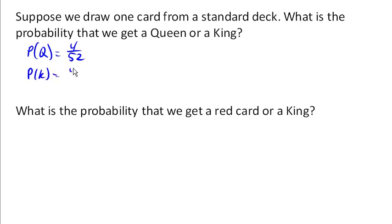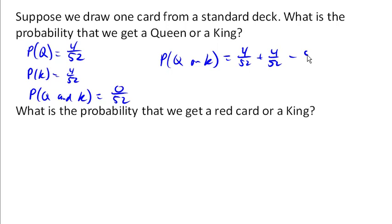What's the probability that the card is both a queen and a king? Well, none. It's impossible for a card to be both a king and a queen. It's one or the other. And so the probability of queen or king here is just 4 out of 52 plus 4 out of 52 minus 0 is 8 out of 52, is our probability there.